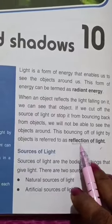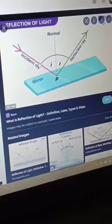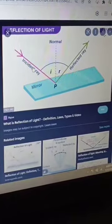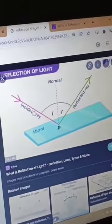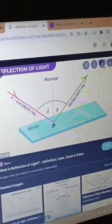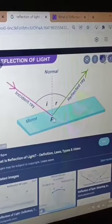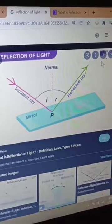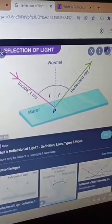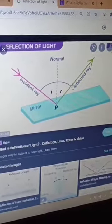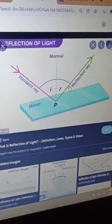Now students, what is reflection of light? The bouncing of light by objects is known as reflection of light. You can see this diagram — the ray is coming to the mirror and bouncing back. The ray coming to the mirror is the incident ray, and the ray bouncing back is known as the reflected ray.